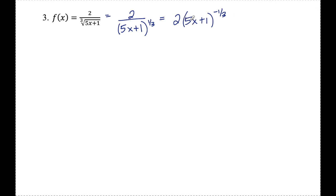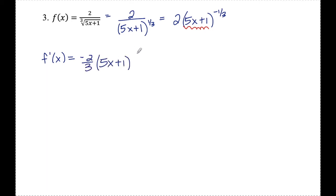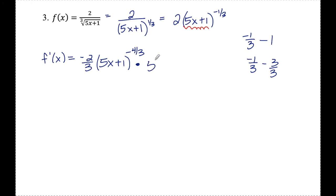Now I'll find f prime using the chain rule. The inside piece is 5x plus 1. Derivative of the outside, leaving the inside alone: negative one third times 2 gives negative two thirds. Leave the inside alone and drop the exponent by one: negative one third minus 1 equals negative one third minus three thirds, which is negative four thirds. So I have negative two thirds times 5x plus 1 to the negative four thirds. Then times the derivative of the inside, which is 5.